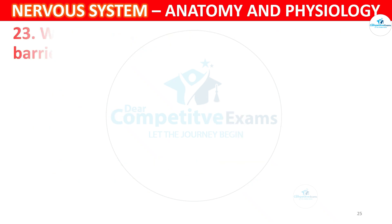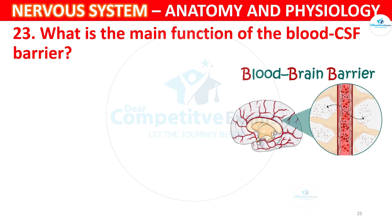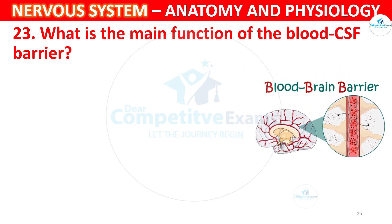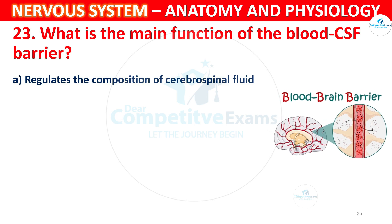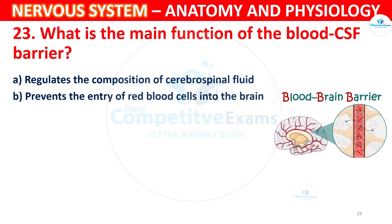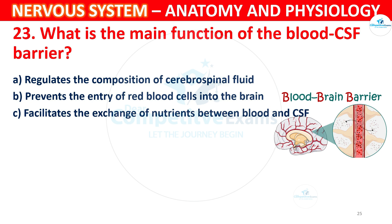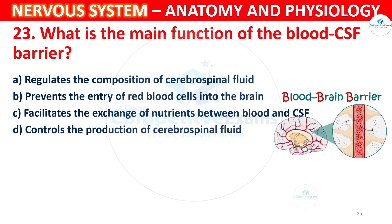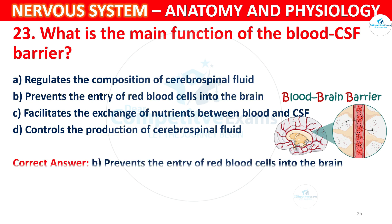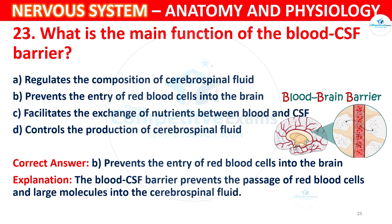Question 23: What is the main function of the blood-CSF barrier? Options: A) Regulates the composition of cerebrospinal fluid, B) Prevents the entry of red blood cells into the brain, C) Facilitates the exchange of nutrients between blood and CSF, D) Controls the production of cerebrospinal fluid. The correct answer is B. The blood-CSF barrier prevents the passage of red blood cells and large molecules into the cerebrospinal fluid.